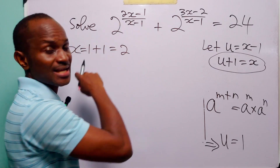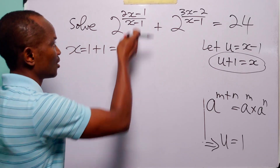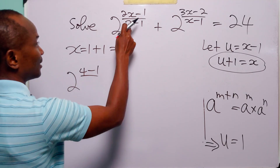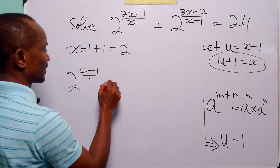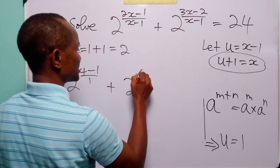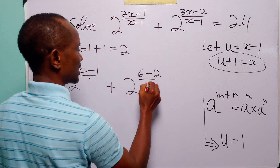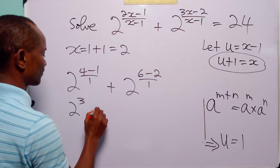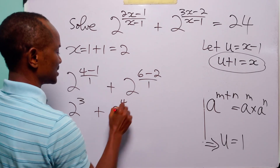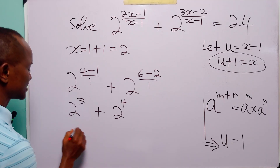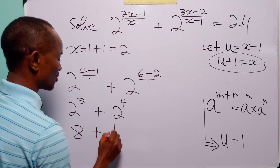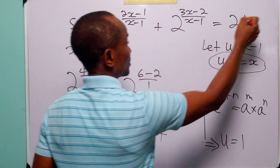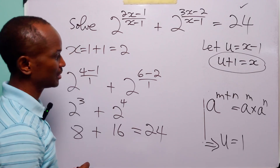To check our answer, we simply substitute x equal to 2 into the original equation. When we do that, we have 2 to the power of 2 times 2 is 4 minus 1, over 2 minus 1 is 1, plus 2 to the power of 3 times 2 is 6 minus 2 over 2 minus 1 is 1. Here we have 2 to the power of 4 minus 1, which is 3. 6 minus 2 is 4, so 2 cubed is 8, and 2 to the power 4 is 16. 8 plus 16 is equal to 24, which is exactly what we have on the right-hand side of the original equation.